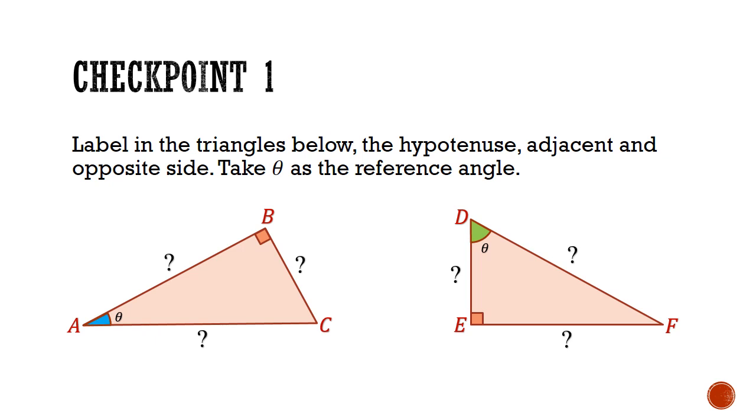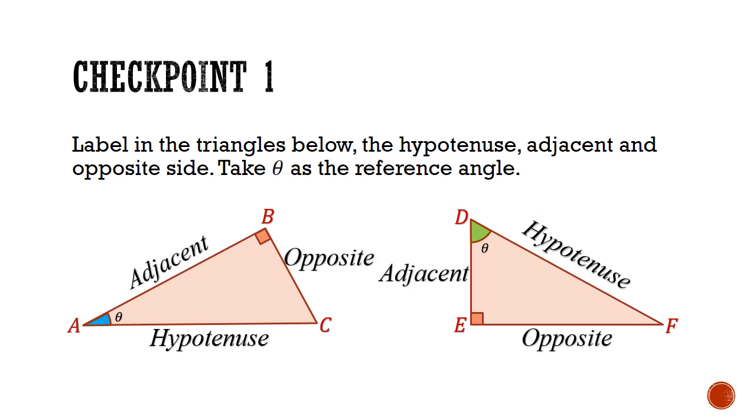Now it's your turn. Look at these two triangles and label the sides. Which side is the hypotenuse, the adjacent, and the opposite. Pause the video here and check your understanding. Now for the answers. Here is the hypotenuse. Here are the adjacent sides. And here are the opposite sides. Did you get them?